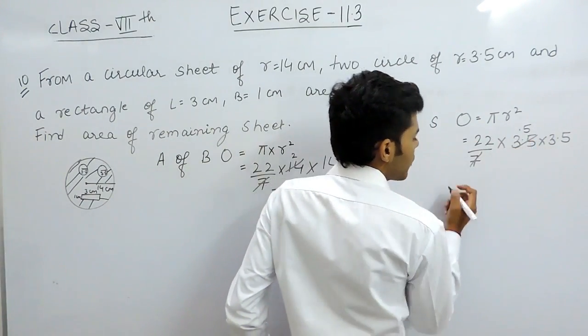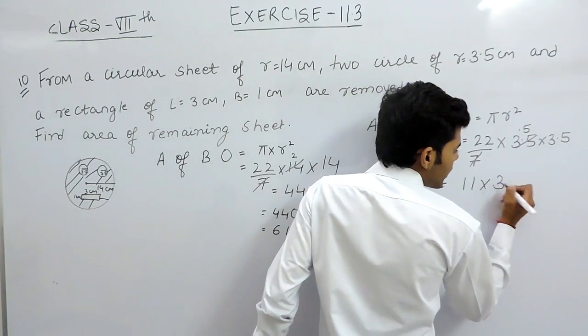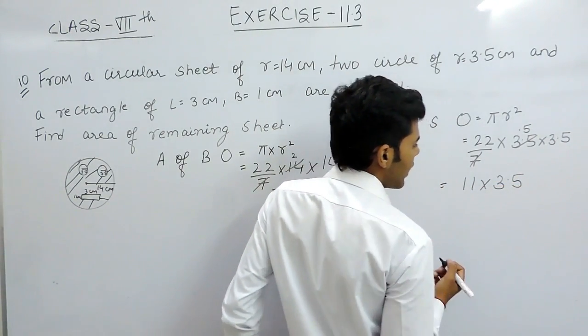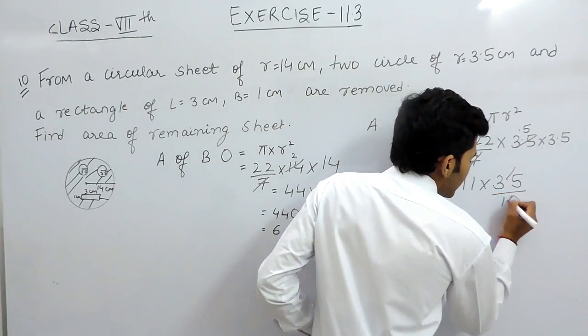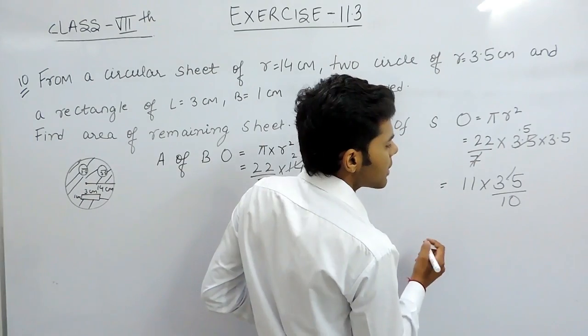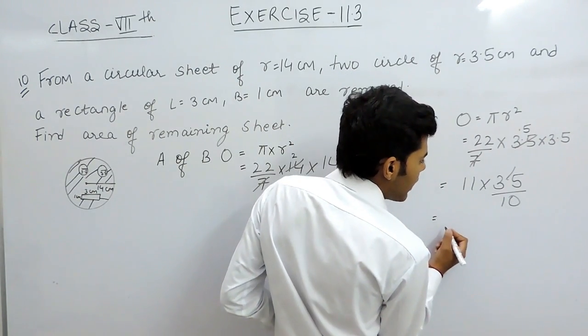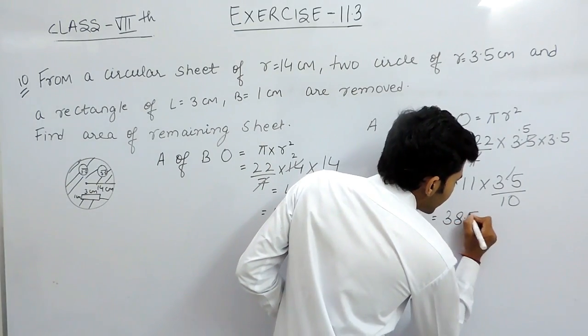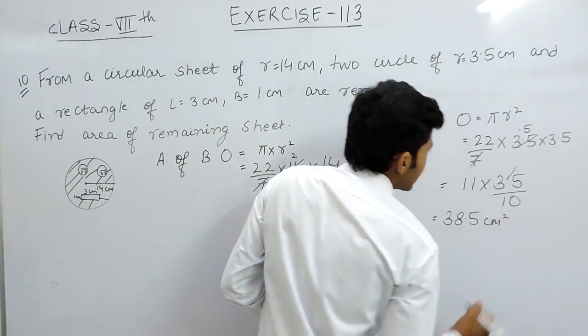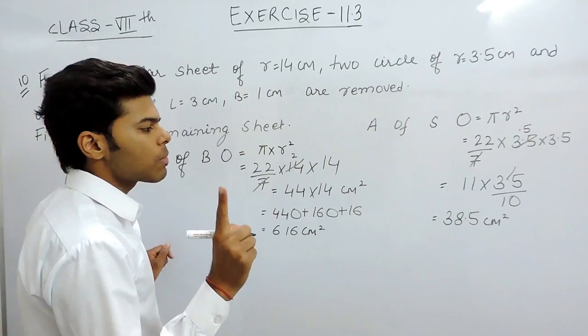The denominator is 10. 350 plus 35 equals 385, and divided by 10 that is 38.5 cm². This is the area of one smaller circle.